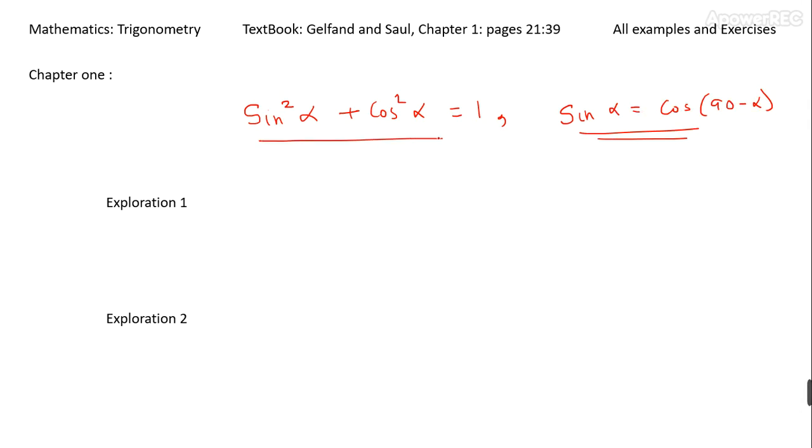After these two basic relationships between sine and cosine, he carries out two explorations and asks a question: what is the maximum possible value of sin α + cos α, where alpha can be any angle between 0 and 90?